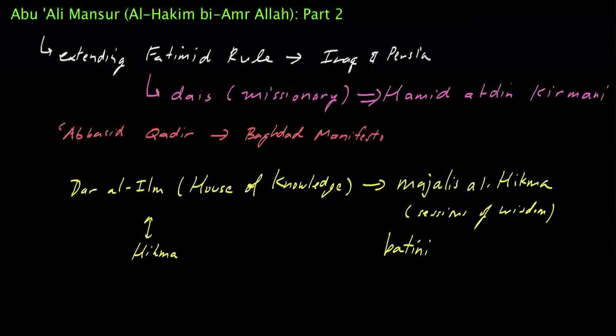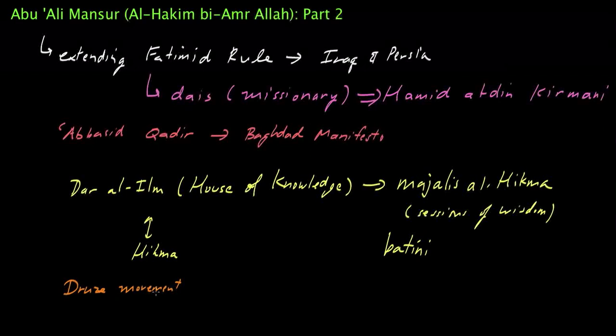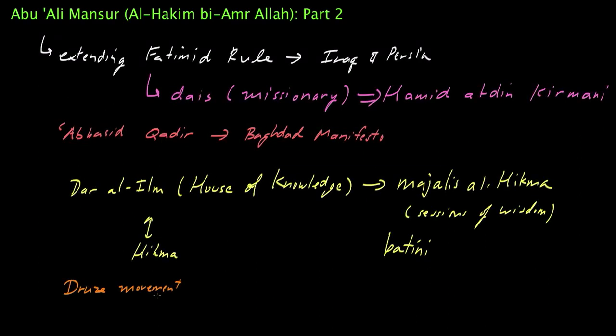So, another fascinating aspect of Imam al-Hakim's reign was his association with what became called the Druze Movement. The Druze Movement. And the Druze Movement, the followers, rather, of the Druze Movement, really accorded a level of divinity to Imam al-Hakim. They really accorded him with the divine status, effectively.